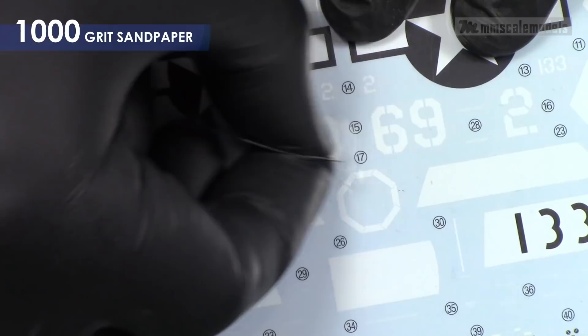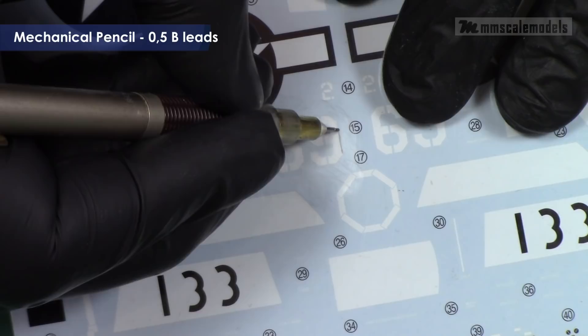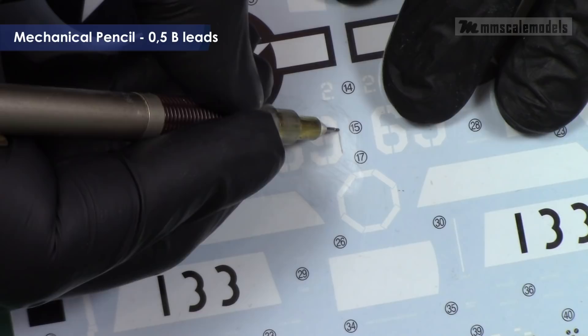To allow for a better grip I sand the acetate sheet with a 1000 grit sandpaper. Then I trace the outlines with mechanical pencil. You can do that with a ruler or free hand.